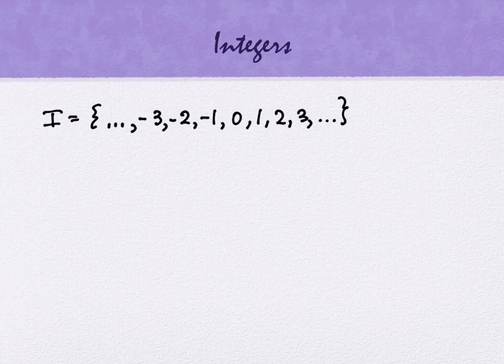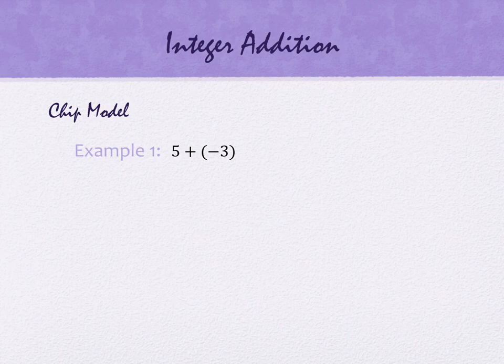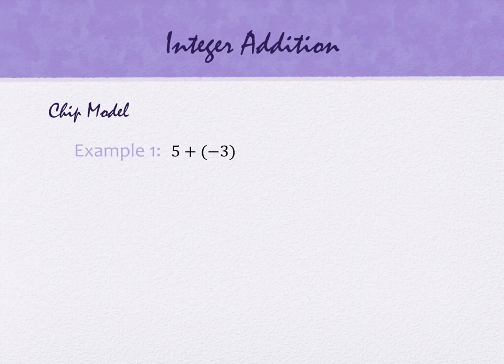So our first model is called the chip model. You'll notice that the chips that you have are double-sided. One side represents a positive number, and the other side represents a negative number.